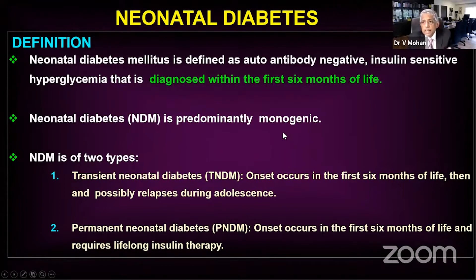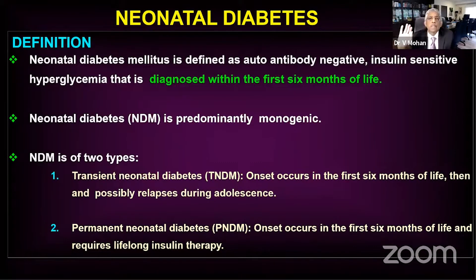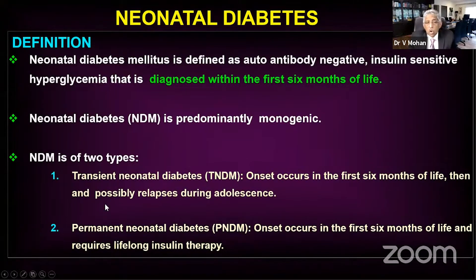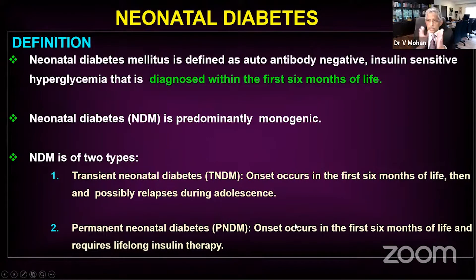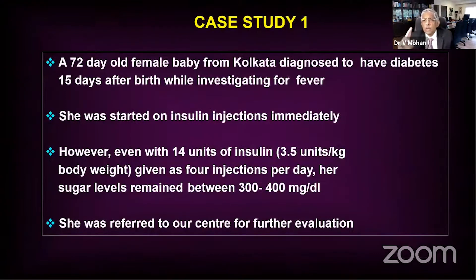Neonatal diabetes is a monogenic disease — a single gene defect. There are two types: transient neonatal diabetes (TNDM), which occurs within the first six months and goes away before the first birthday but can come back during adolescence. Then there is permanent neonatal diabetes (PNDM), which occurs within six months and requires lifelong insulin therapy, tablet therapy, or some other therapy. In my series the largest group is PNDM.